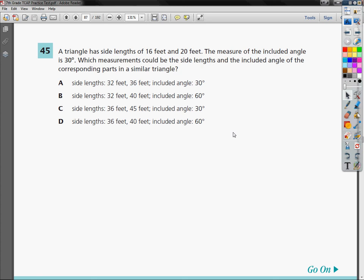A triangle has side lengths of 16 and 20 feet. The measure of the included angle is 30 degrees. That's important. The included angle means the angle between the sides.